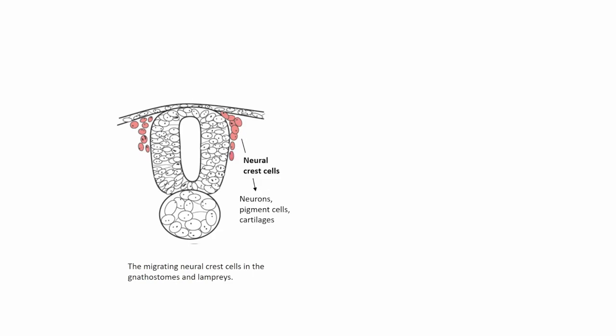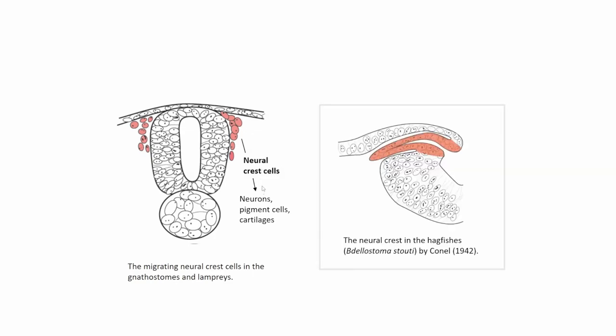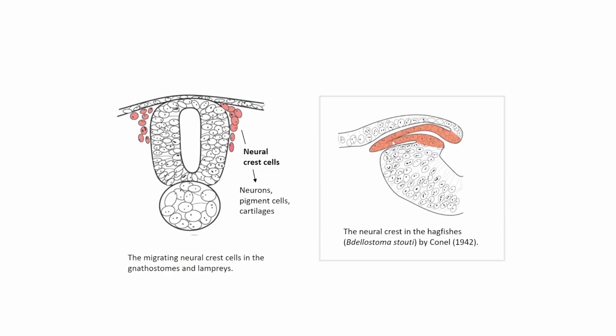Both lamprey and gnathostomes — including us humans — have migratory neural crest cells. A vertebrate body is big but has sophisticated, highly diverse sensory organs and skeleton — the textbook author argues this is because of migratory neural crest cells. But the hagfish, according to an old paper by Cornell from the 1940s, apparently has no migratory neural crest cells. It looks ancestral.